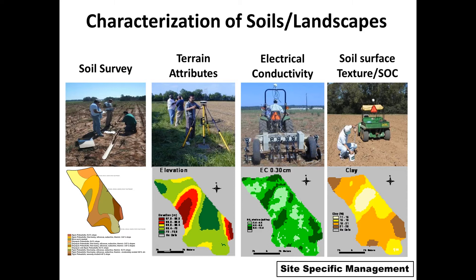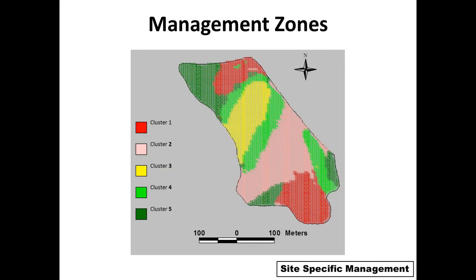Once you have all those layers of data, you can use them to delineate zones — and here's where things become a little tricky. Here's a field of about 20 acres that has been delineated into five different clusters or zones. In reality, when this field was managed, it was managed as only three zones, because five management zones get to be a little too much for practical purposes. That's something that needs to go into the decision scheme — what is practical — and it's more of an art than a science.